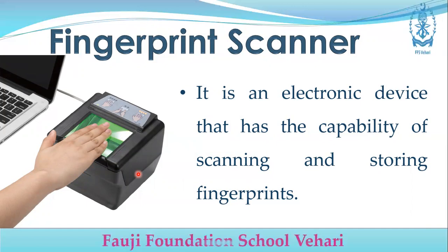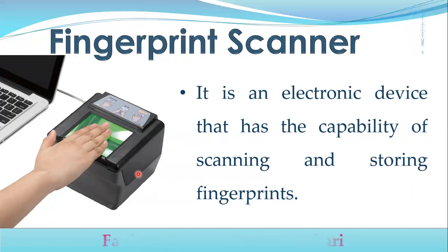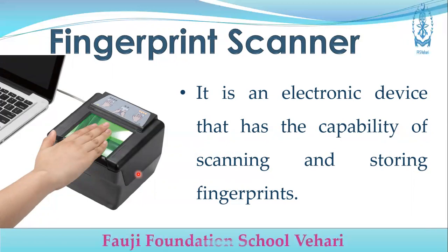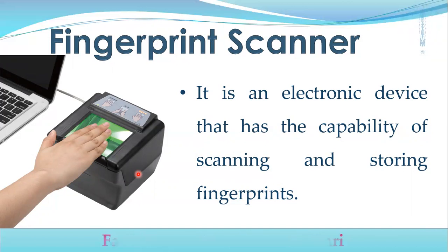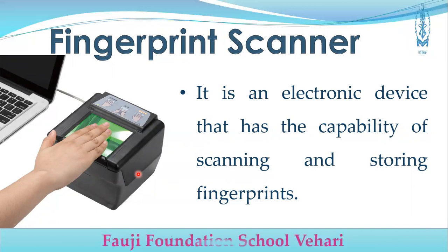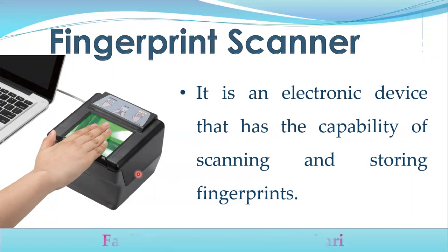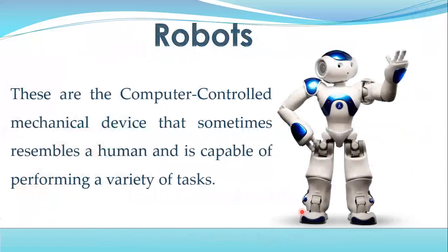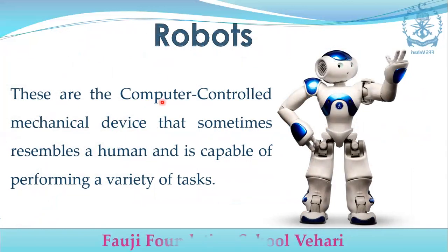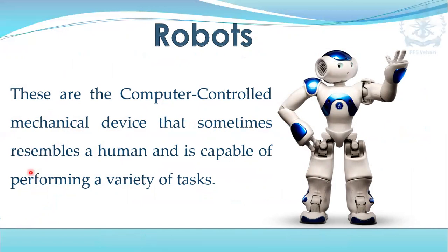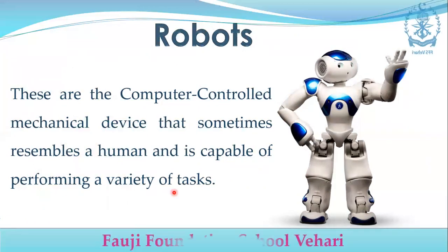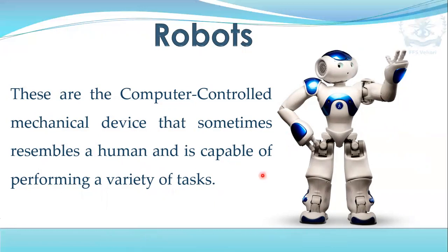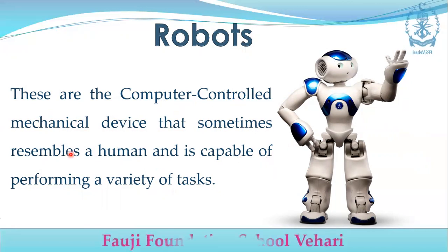You may also have a fingerprint lock on your mobile — you scan your fingerprint to unlock it. So this fingerprint scanner is used to scan your fingerprint. Robot: it is a computer-controlled mechanical device that sometimes resembles a human and is capable of performing a variety of tasks — it does work like humans.